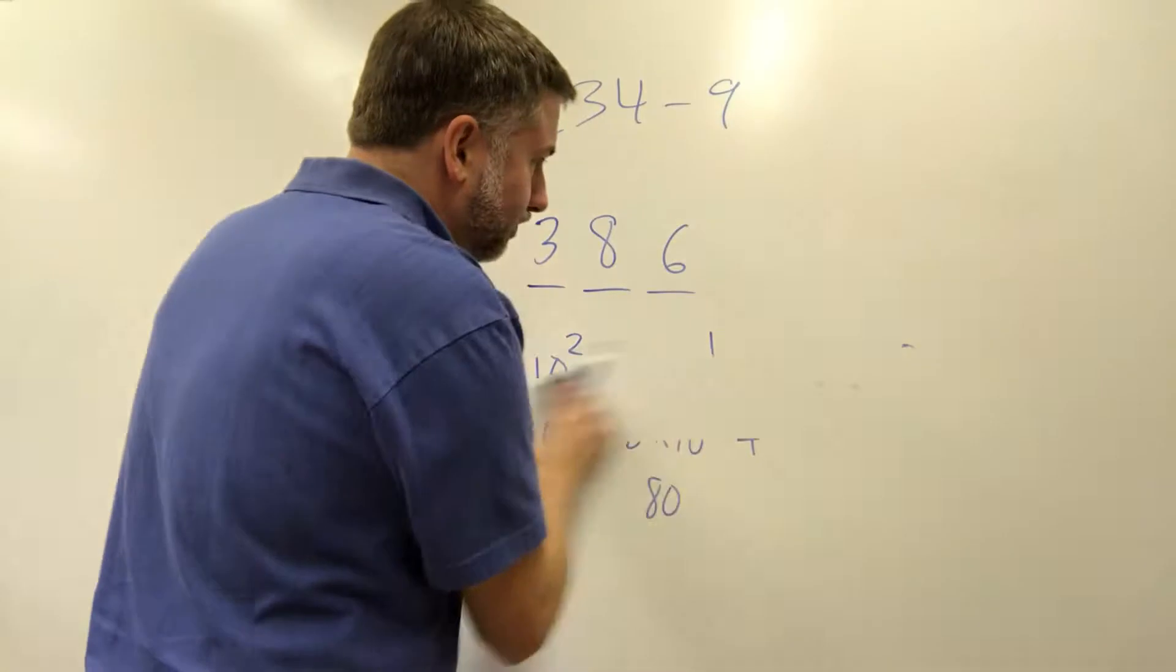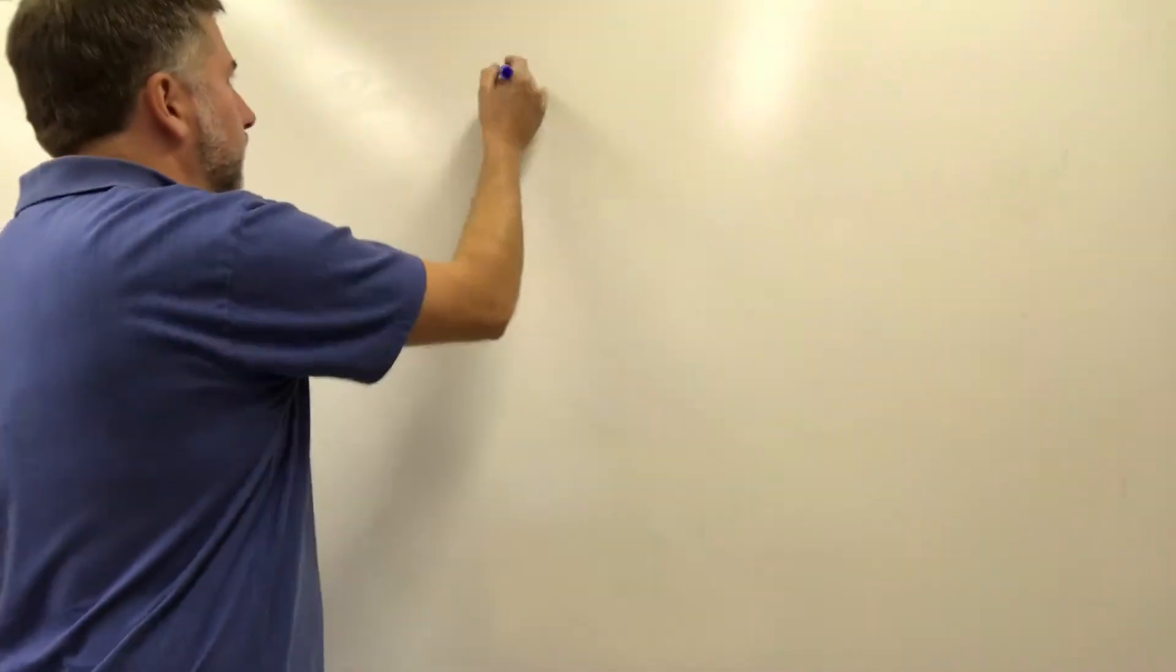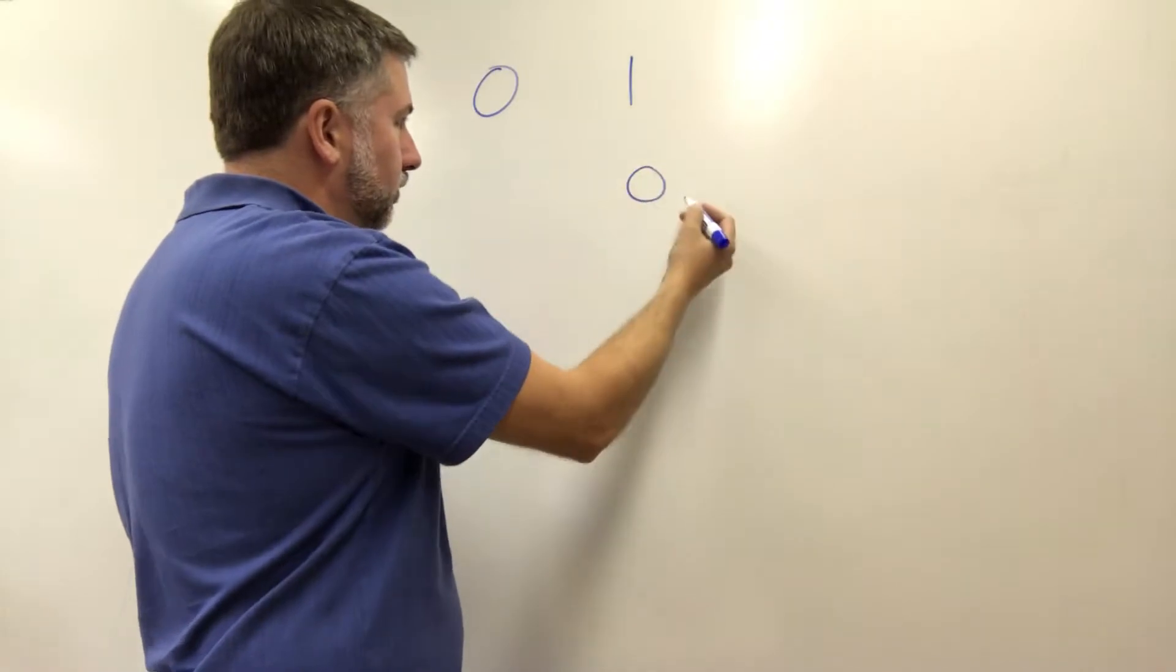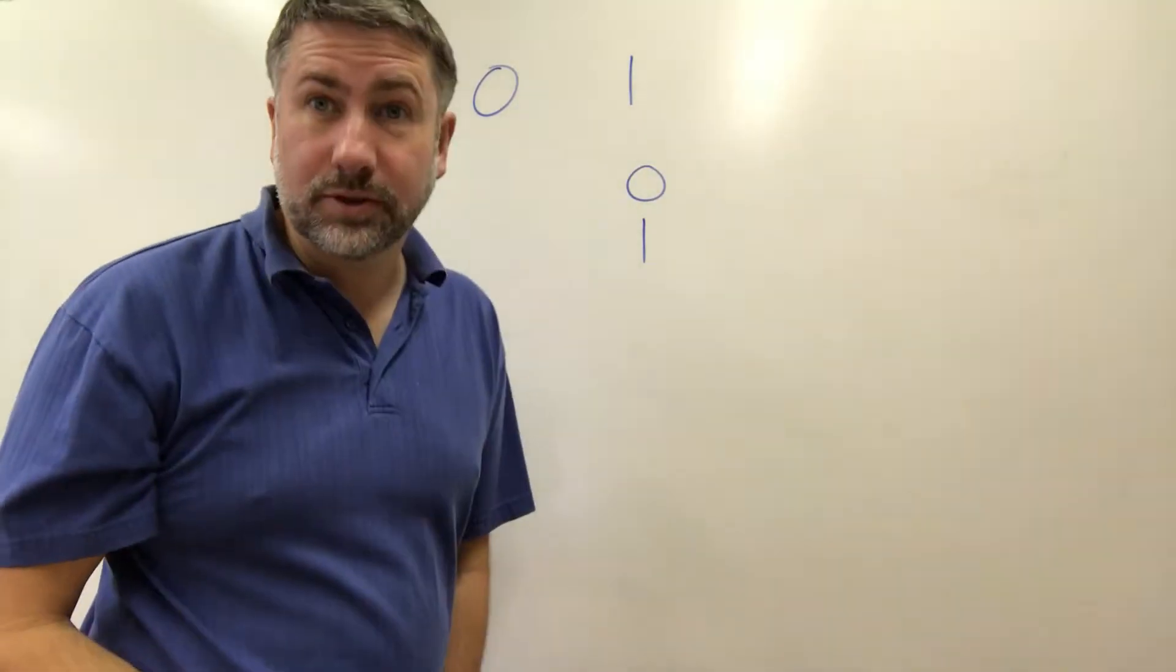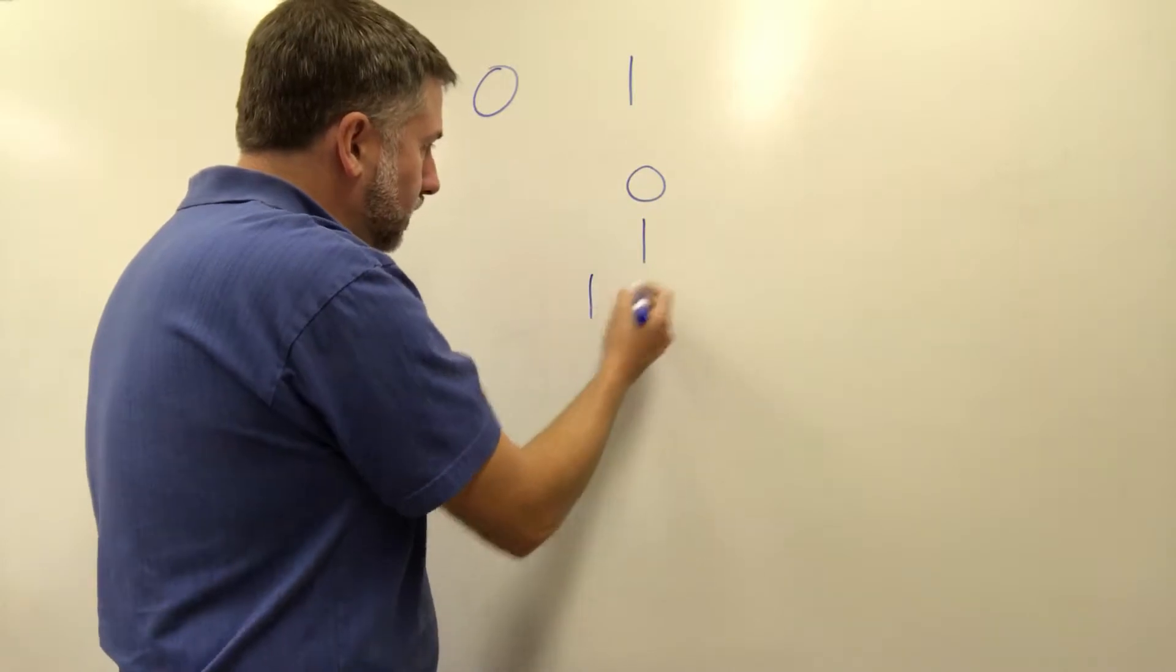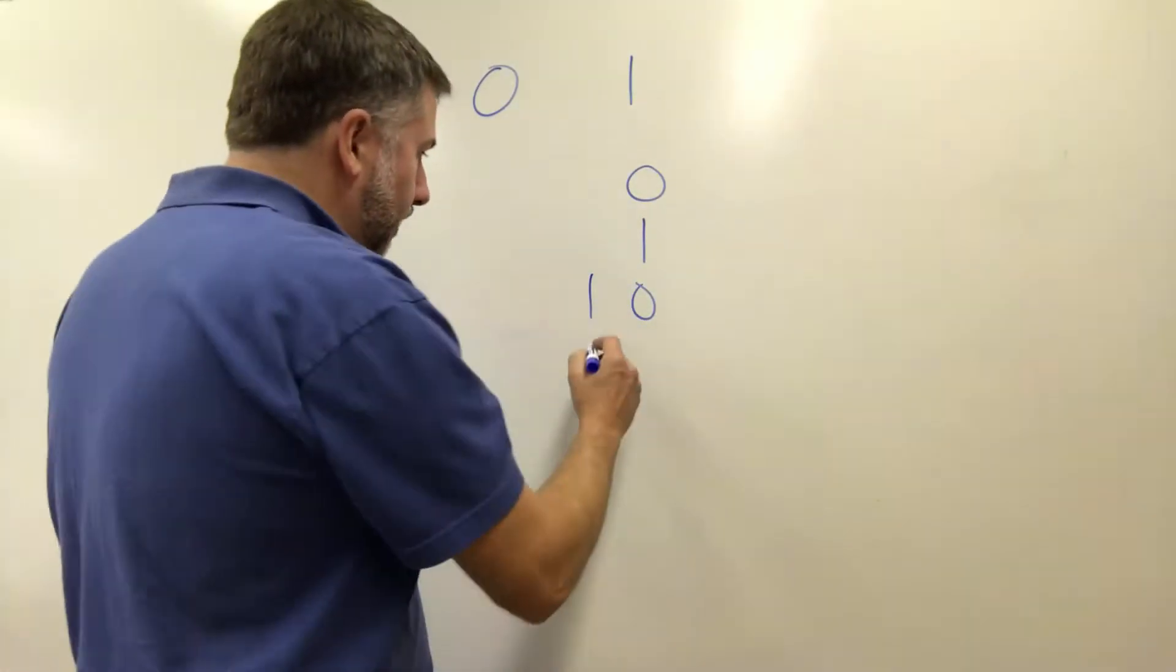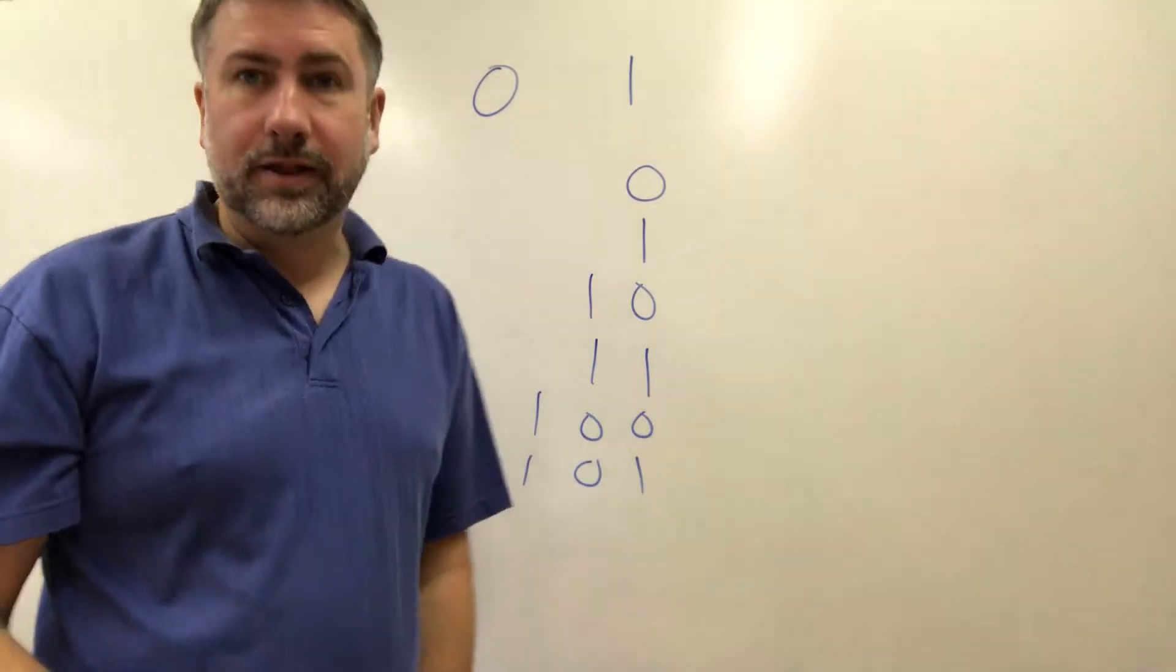In binary we can't do that because we only have two values zero and one. And if we start counting we will have a zero in the first place value and then a one in the first place value and then we run out of possibilities for the first place value. So the second place value has to give us some number of two. So this looks like ten but it's two. And then this is three and this is four and this is five and on like that.